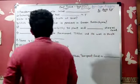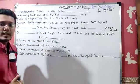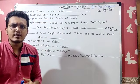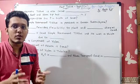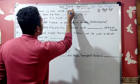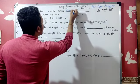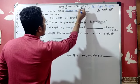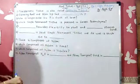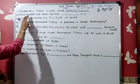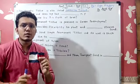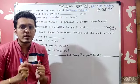First question: meristematic tissue is also called as dash. Any guesses? Growing tissue. Question number 2: growing root and stem tip — dash meristematic tissue. Tips are also called as growing tissue.